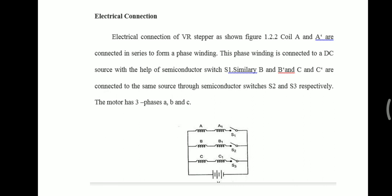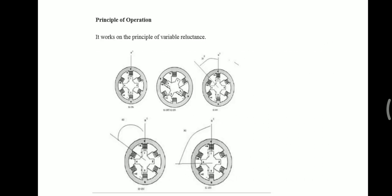The motor has three phases: A, B, and C. When it comes to the principle of operation of VR stepper motor, there are three different modes of operation. Mode 1 is the one phase on or full step operation. It works on the principle of variable reluctance.